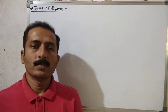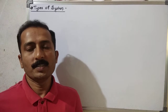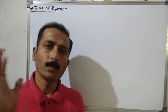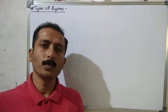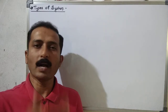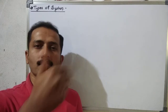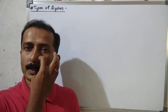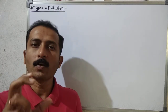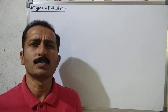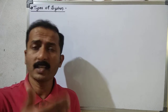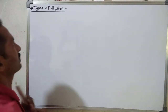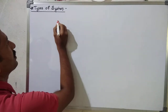Hello dear students. In this video we shall discuss the types of system. In the previous video we have seen what is the universe, what are the different parts of the universe — system, surrounding, boundary. Now in this video we shall concentrate on the system: what is meant by system, and the types of system.